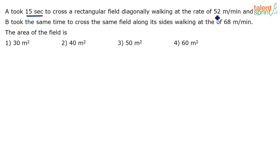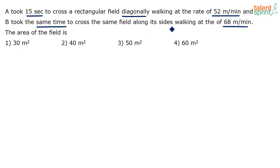The speeds of these two persons are 52 meters per minute and 68 meters per minute respectively. Both of them have taken 15 seconds to cross this rectangular field. The difference is that person A has crossed this field diagonally and the other person B has crossed the same field along its sides. Based on this data, we need to find out the area of the field.